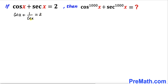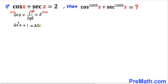Now let's remove this fraction. I am going to multiply across the board by cosine of x. Cosine of x times cosine of x gives us cosine squared of x, and here cosine of x and cosine of x cancel each other out, so we get 1 equals 2 times cosine of x on the right hand side.